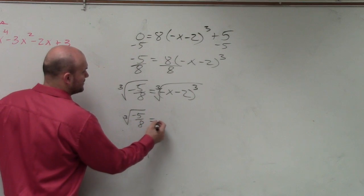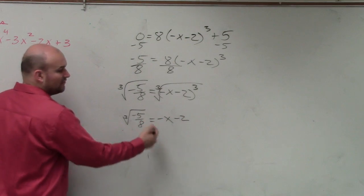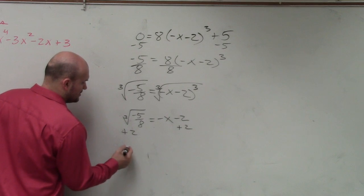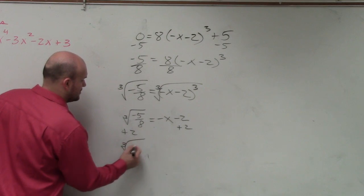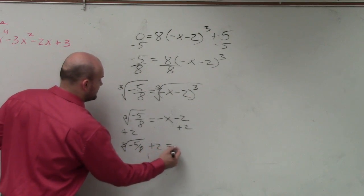And so now that equals negative x minus 2. So all you got to do is solve for x. Add 2, add 2. So I have the cube root of negative 5 over 8 plus 2 equals negative x.